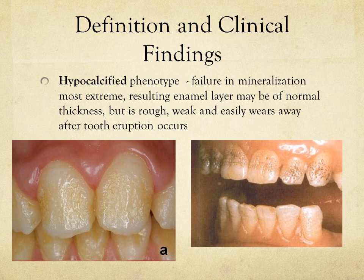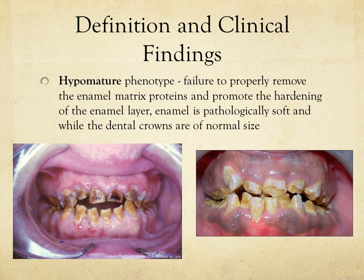The next phenotype is the hypocalcified phenotype, which is a general failure of mineralization and is the most extreme phenotype. You see enamel on the tooth, but it easily wears and flakes away with time and wear.